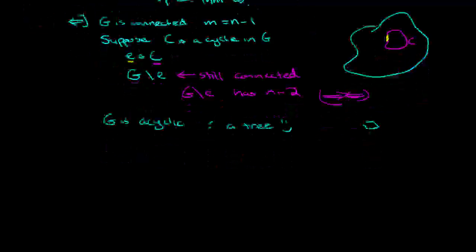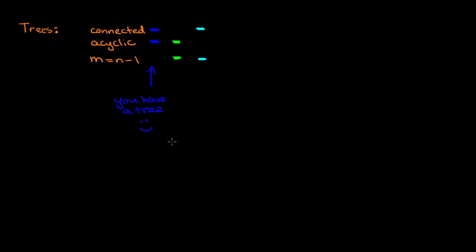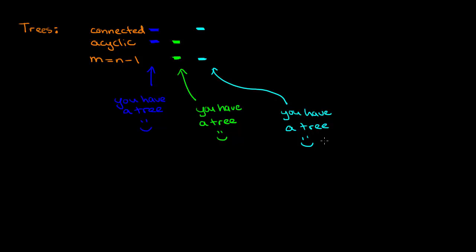Let's summarize what we know about trees. Trees are connected and acyclic by definition. We have a theorem that a graph is a tree if and only if it's acyclic and has m equal to N minus 1. And another theorem says connected and m equal to N minus 1 also gives a tree. So in fact, if you have any two of these three properties — connected, acyclic, m equals N minus 1 — you know you have a tree. Hope you're enjoying graph theory; subscribe to the channel to be updated on the latest videos.